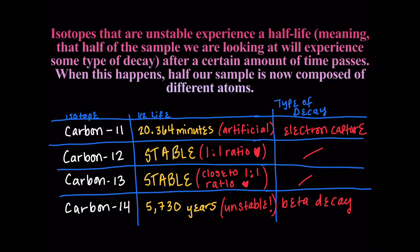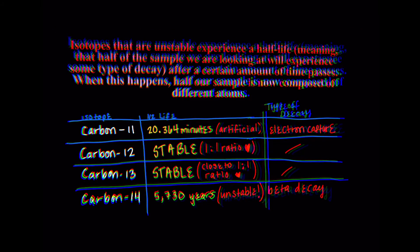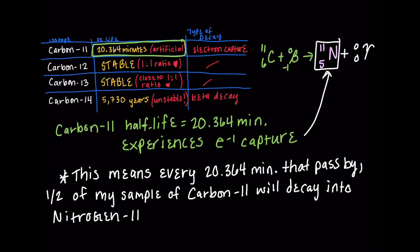I am using this chart from another example that we did on this unit and I'm going to be looking at carbon-11. If you look on this table, carbon-11 has a half-life of 20.364 minutes. And when you write the reaction after it experiences electron capture, it's going to decay into nitrogen-11.